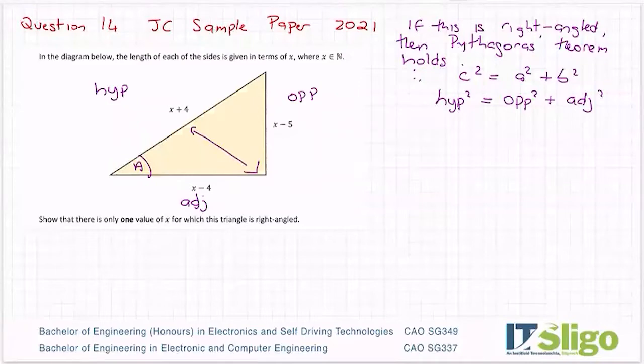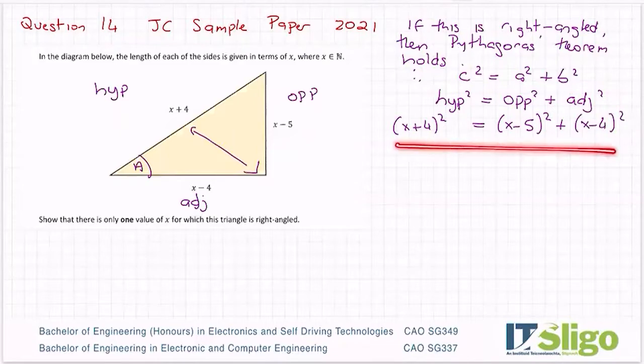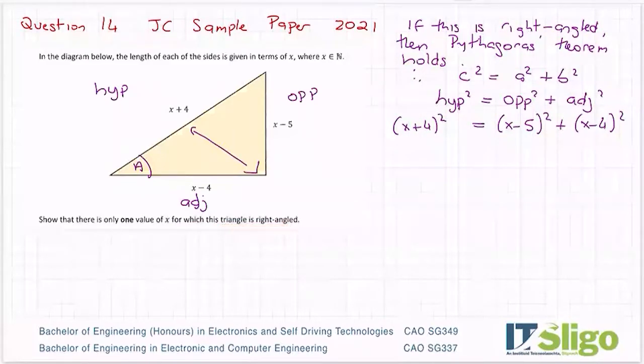That's another way of writing Pythagoras' theorem. So if I fill it in from our triangle, then we have (x+4)² = (x-5)² + (x-4)², well, if we call that our opposite and (x-4)² is our adjacent. So that's Pythagoras' theorem. And we have to show that there's only one value of x when this triangle is right-angled. Okay, so it's a lot of algebra.